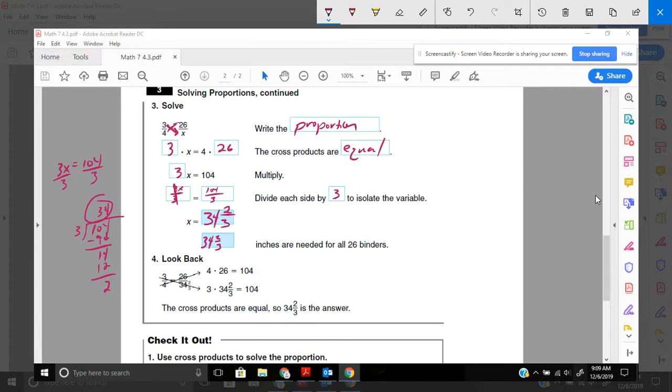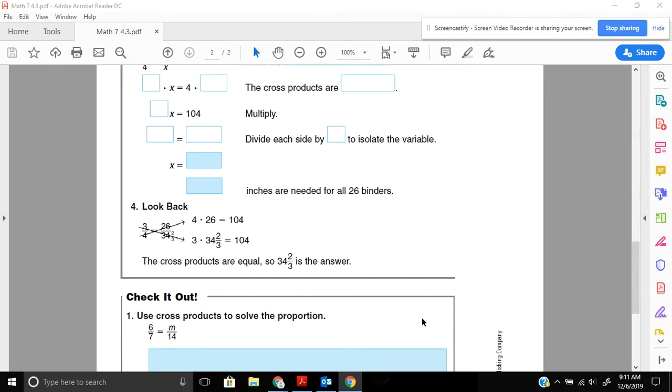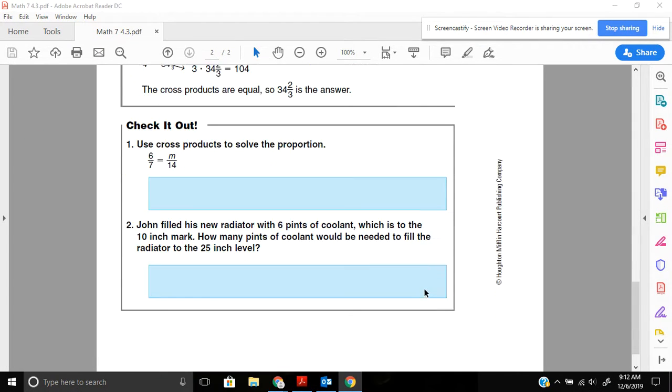It says to check that, take 4 times 26. Well, you'll get 104. And take 3 times 34 and 2 thirds, again, you'll get 104. So just double-checking, yes, that is the correct answer. Go ahead and pause the video here to try the check-it-out problems on your own.